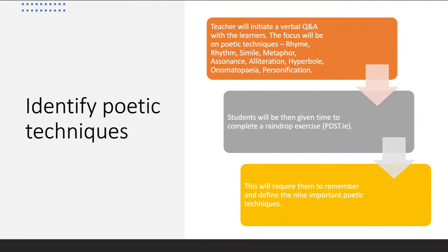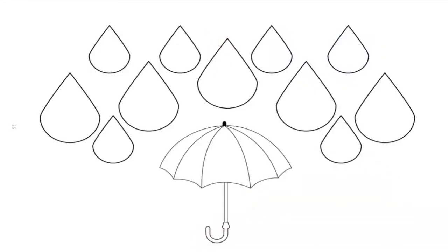The teacher will ask for volunteers to speak in class and share ideas they may have on any of the poetic techniques. Students will then complete a raindrop exercise, which is a good exercise to graphically organise their ideas. They will write the headings and a brief explanation of poetic techniques in the raindrops, giving them a visual representation of the information. This helps visual learners who may struggle to conceptualise spoken definitions. To assess this exercise, the teacher will use formative assessment — asking for volunteers to share what they've filled in, then offering feedback on the answers given.